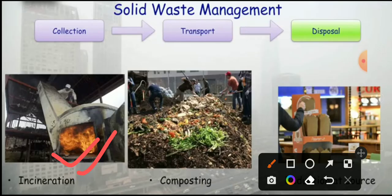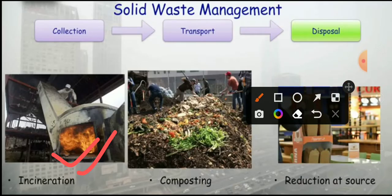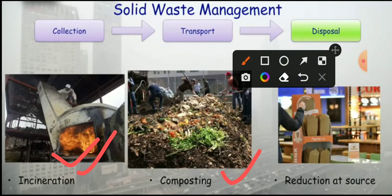In composting, different types of solid waste such as vegetables and food are used to make compost. There are different types of composting methods. The third method is reduction at source, where waste can be reduced at different sources. These are the main disposal methods.